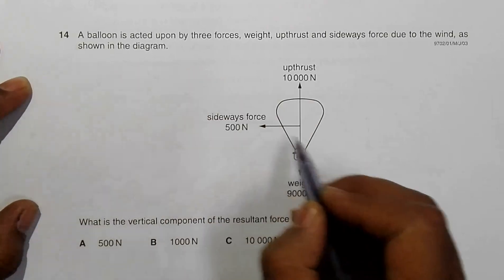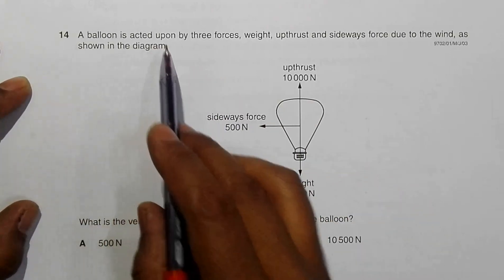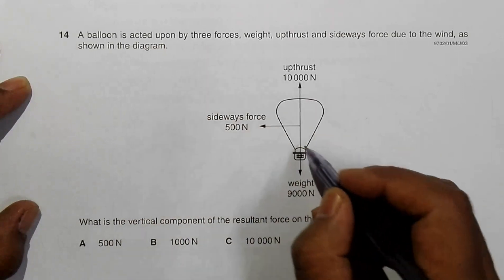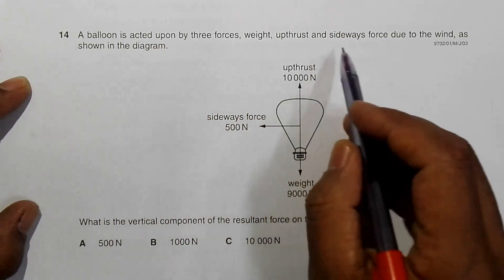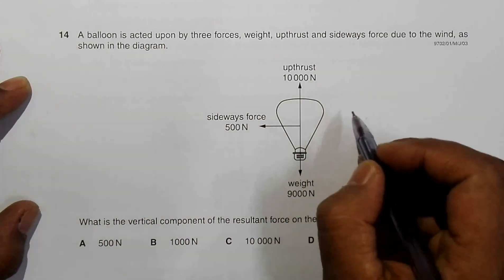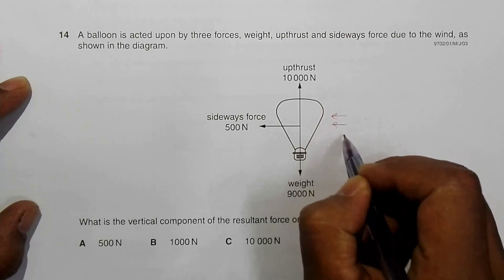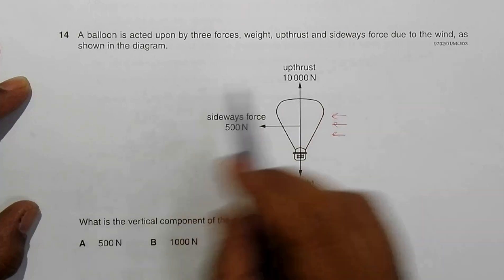A balloon, I've shown you here, is acted upon by three forces: weight, upthrust and sideways force due to wind. Wind is acting like this, as shown in the diagram.